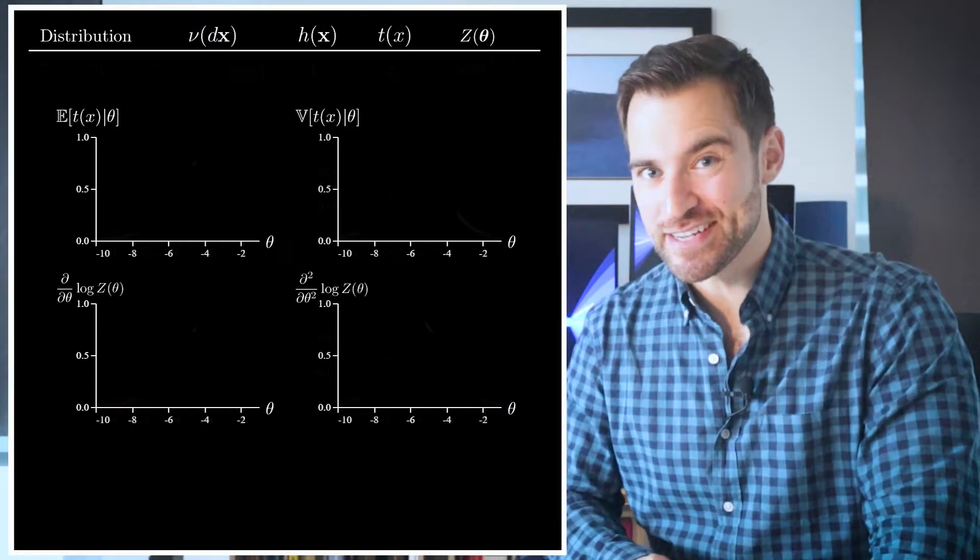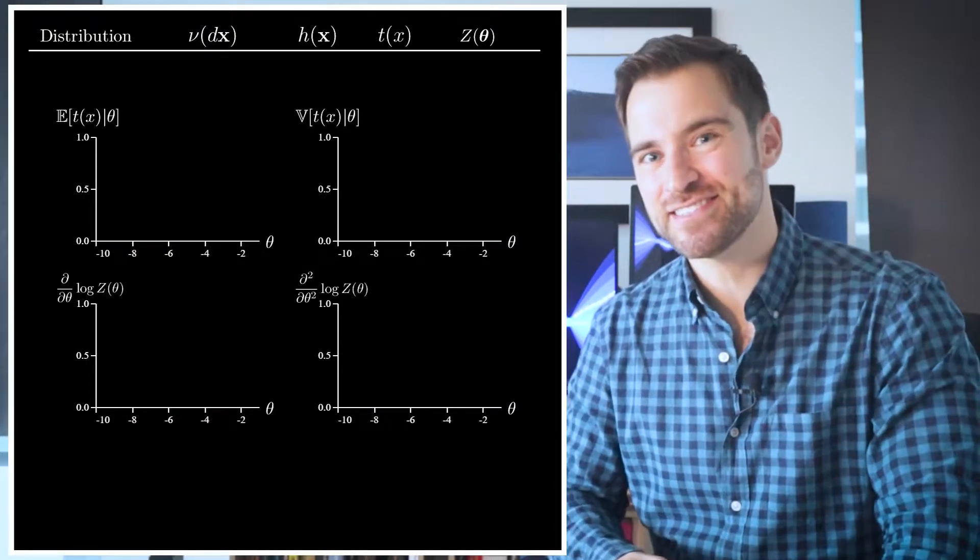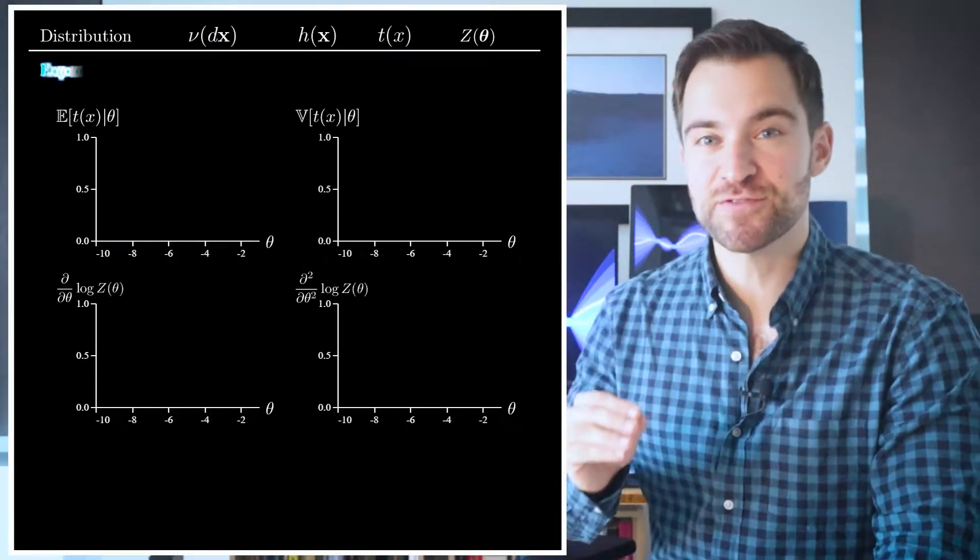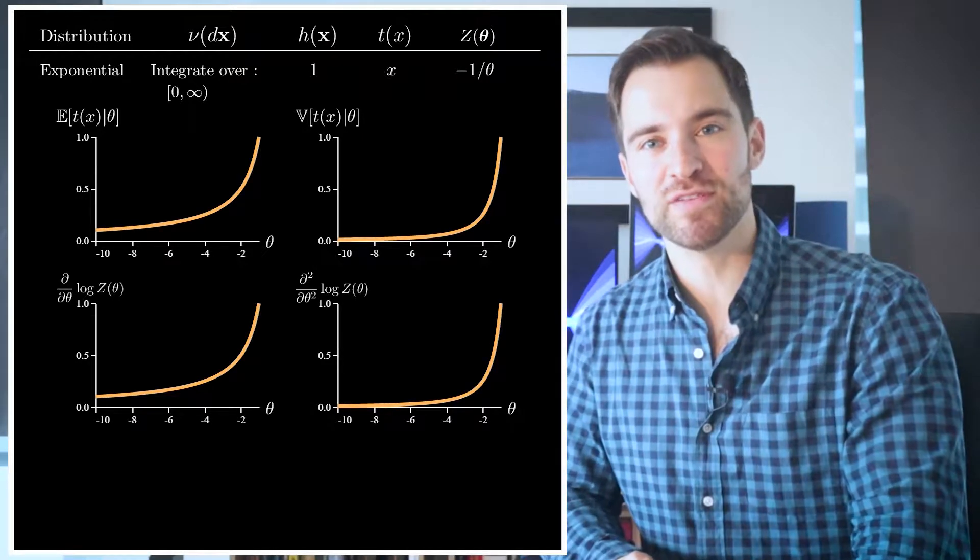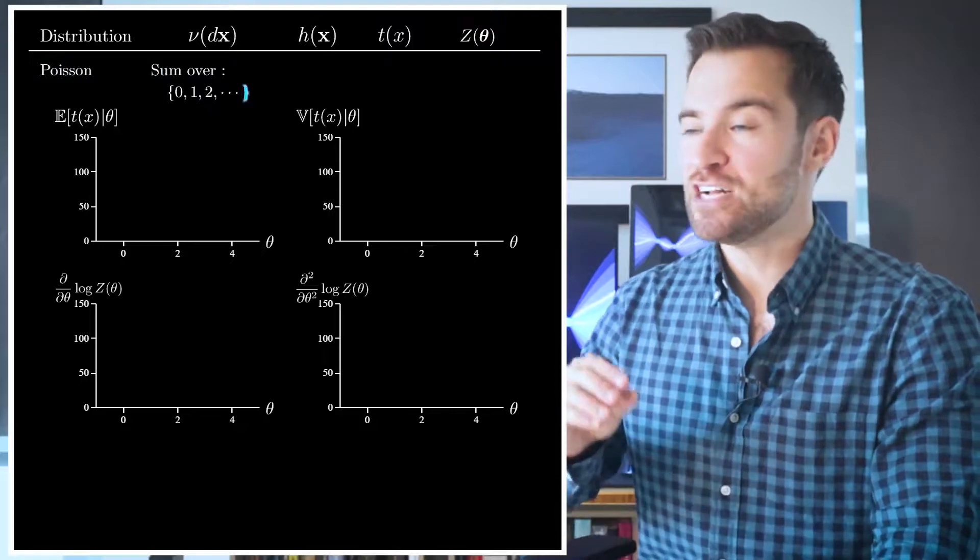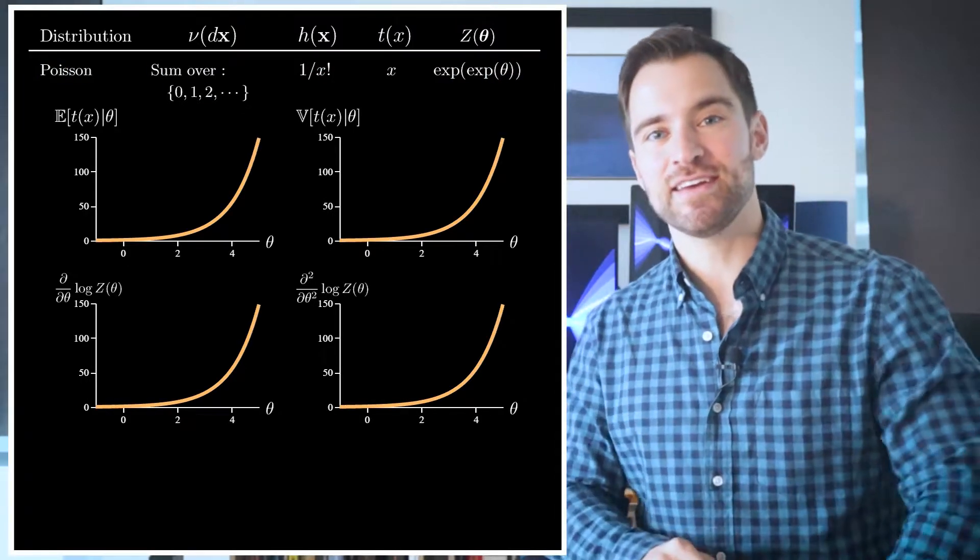But does it generalize? Well, of course it does. If we were to consider the choices for the exponential distribution and created those plots, we'd see the same equivalence. Also, if we switched to the Poisson and drew those plots, we'd see the same thing again.